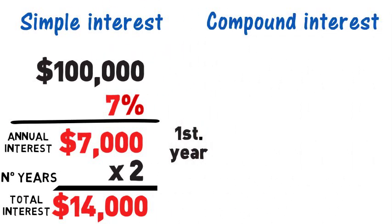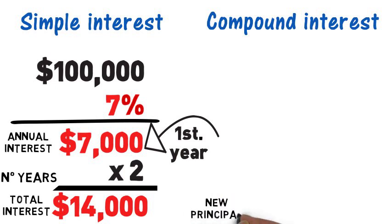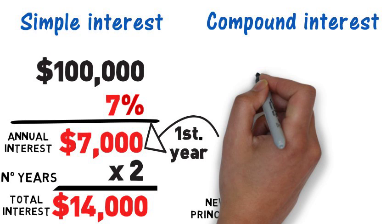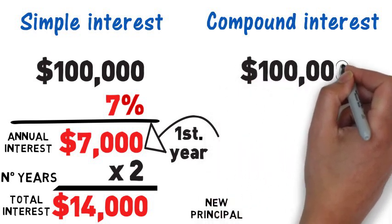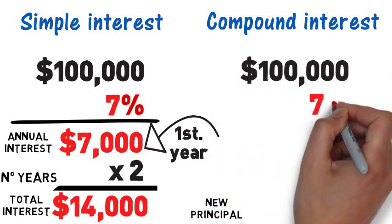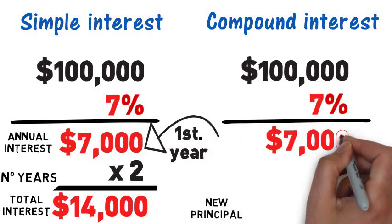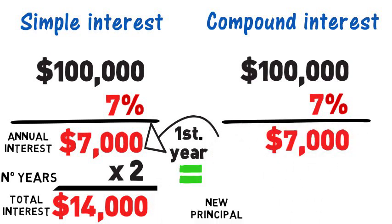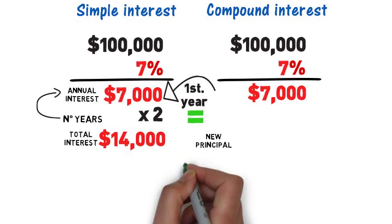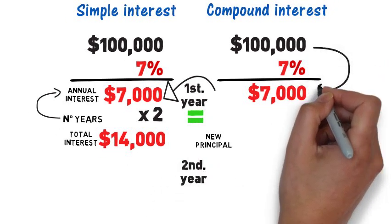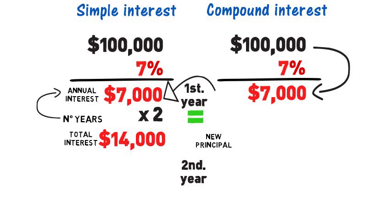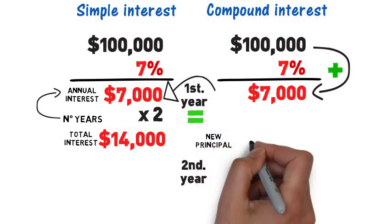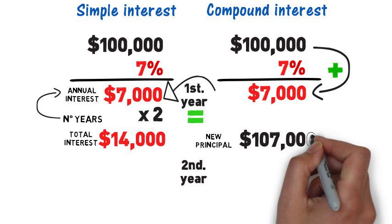Compound interest works a little bit differently in that the interest in the first year will be added to the principal and will become the new principal. In the first year, we're going to have $100,000 multiplied by the rate of 7%, which will give you $7,000. The first year is the same exact example as in the simple interest. In the second year, however, that principal and interest get combined and become the new principal. So we add the $100,000 with the $7,000 and come up with the new principal of $107,000.